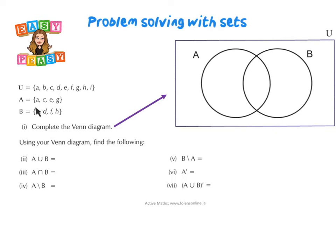Well, straight away, we can see that there's actually no intersection here, because nothing is common. So we put everything into A and everything into B. So for A, I will have A, C, I will have E and G. And that's going to be set A.